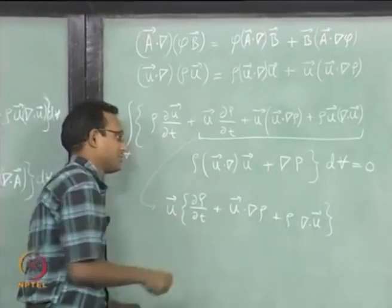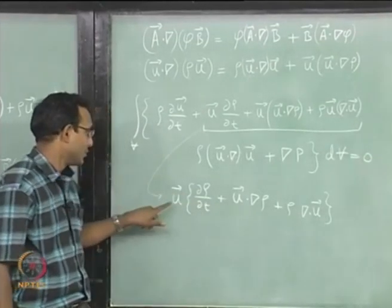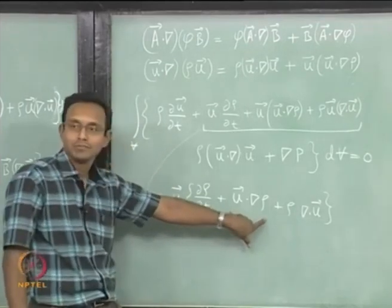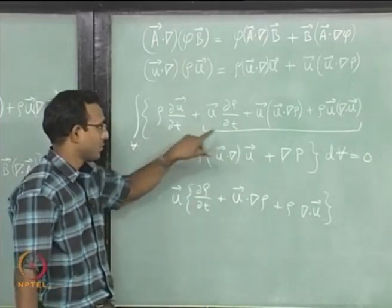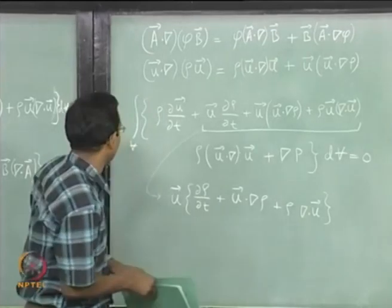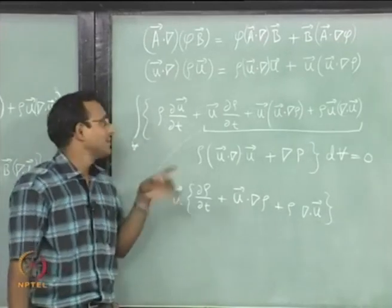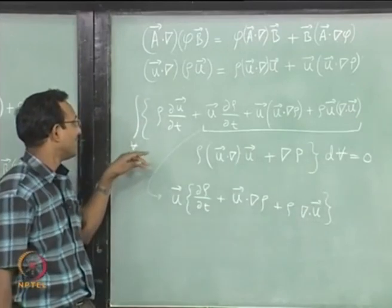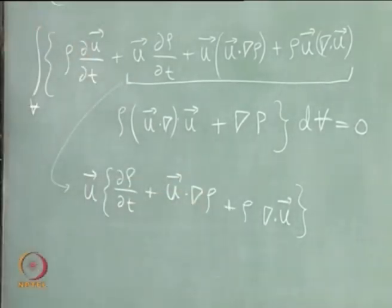Now we want to group it in a nice fashion. I will group these three terms — all of them have a U vector multiplied by something. Just taking that bracket alone it will look like U vector multiplied by something, and that something is just your mass equation which we derived last class. This is U vector multiplied by the mass equation, and if my flow is obeying the mass equation, this will automatically be zero. So my expression simplifies to just this term plus zero plus these two terms — that is what we are going to use from now on.